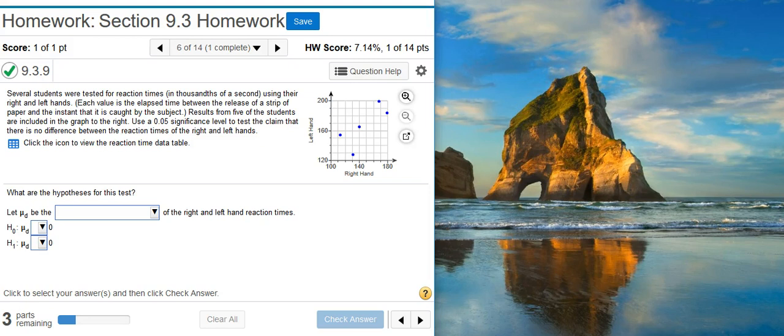Okay, the first part of this problem is asking us for the hypotheses for the test. So, in this first drop-down blank here, it says let mu d be the blank of the right and left hand reaction times. Well, mu d is going to be the mean of the differences. That's how mu sub d is defined. The null hypothesis will always carry an equal sign. So, we select that there.